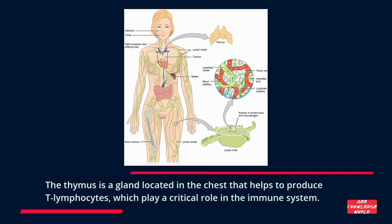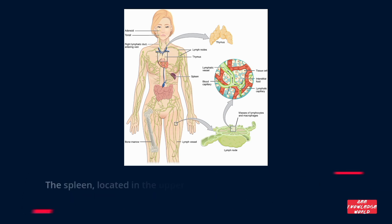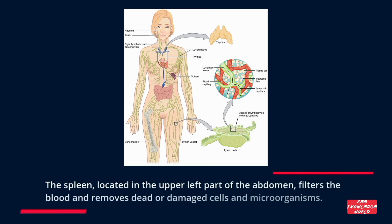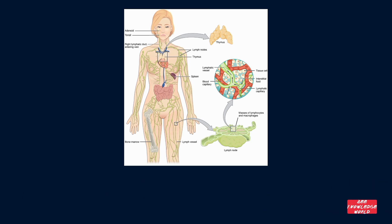The thymus is a gland located in the chest that helps to produce T lymphocytes, which play a critical role in the immune system. The spleen, located in the upper left part of the abdomen, filters the blood and removes dead or damaged cells and microorganisms.